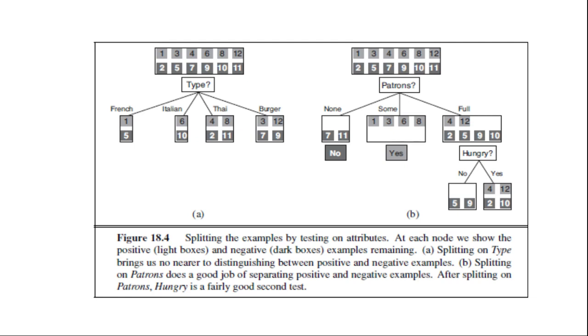Third, if there are no examples left, it means that no examples have been observed for this combination of attribute values. For this combination, we return a default value calculated from the plurality classification of all the examples that were used in constructing the node's parent. These are passed along in the variable parent's examples.